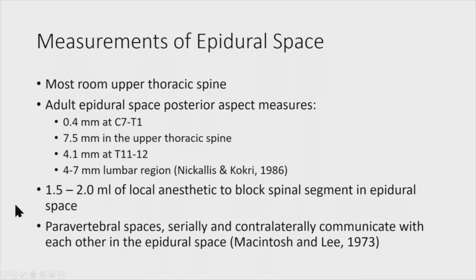This is why we came up with this technique. Most of the room in the epidural space is in the upper thoracic spine, which we can't easily access under fluoroscopy because of the ribs. And a lot of patients in Michigan are obese, so we can't see anything under fluoroscopy. The posterior aspect of the epidural space measures about 0.4 millimeters at C7-T1, about 7.5 millimeters in the upper thoracic spine, gets a little thinner in the lower thoracic spine, and is predominantly very large in the lumbar spine.